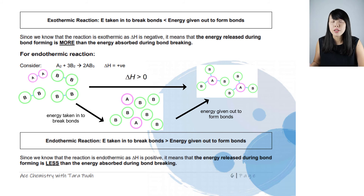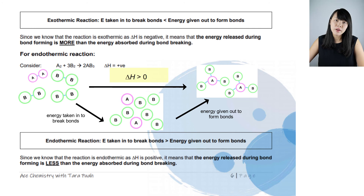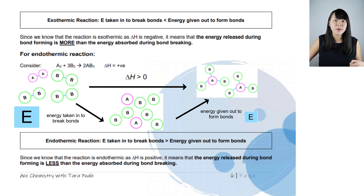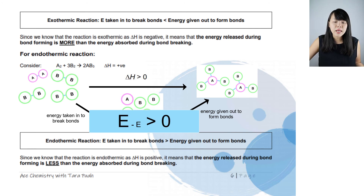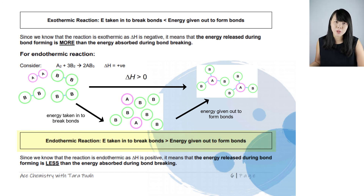The change in energy, delta H, is given by the energy taken in to break bonds minus the energy given out to form bonds. If delta H is positive, it means the energy taken in to break bonds must be much more than the energy given out to form bonds — a big energy minus a smaller energy gives a positive delta H. So in general, in an endothermic reaction, the energy taken in to break bonds must be greater than the energy given out to form bonds.